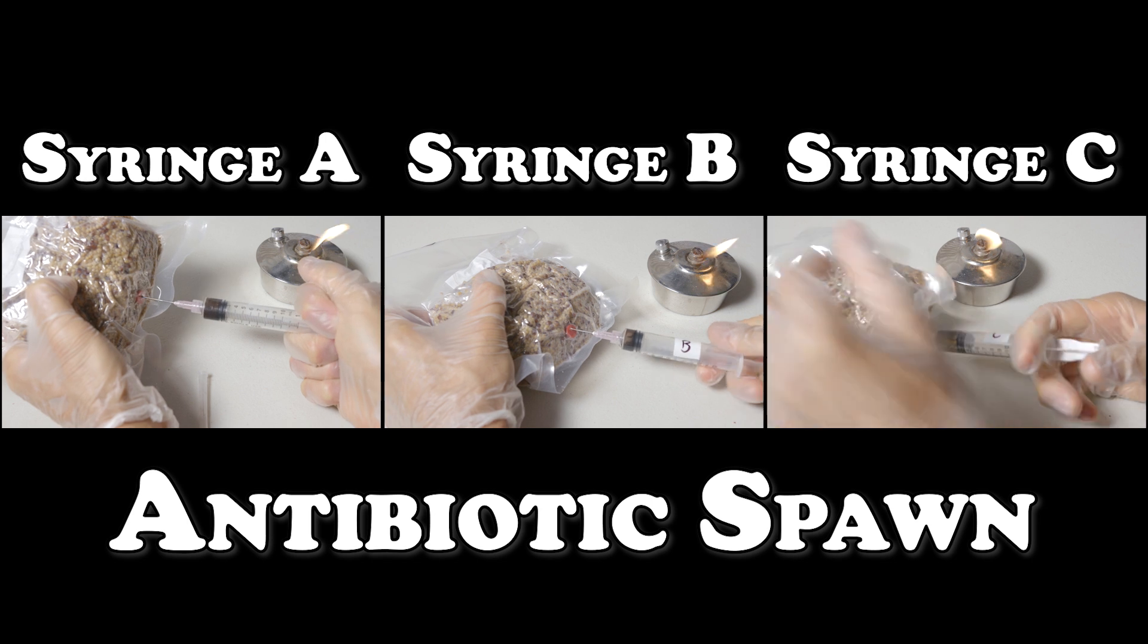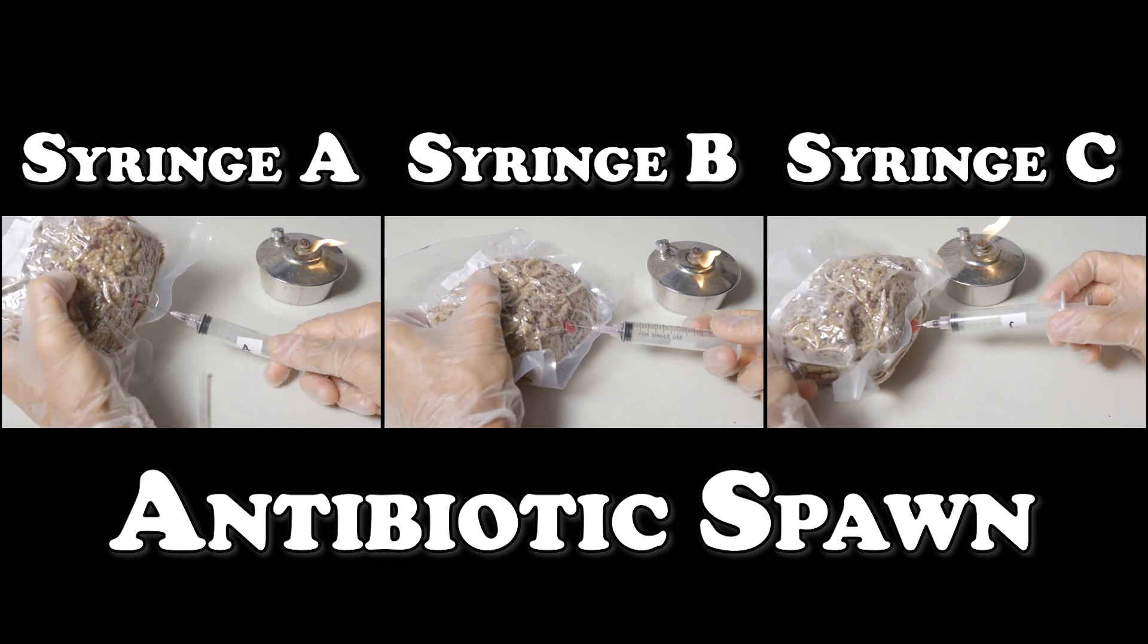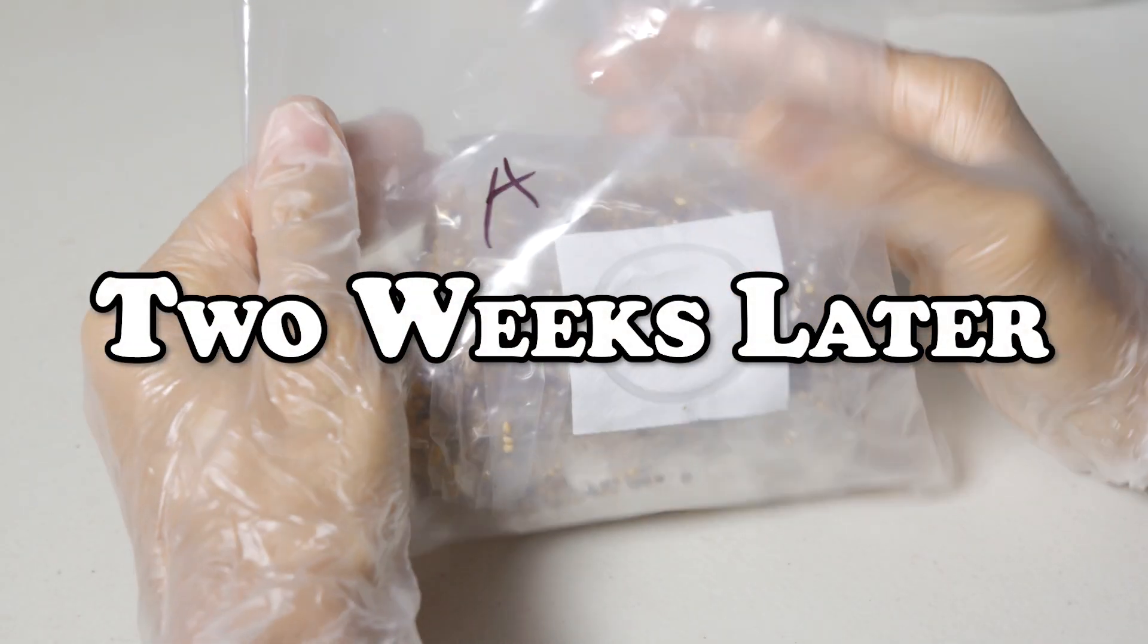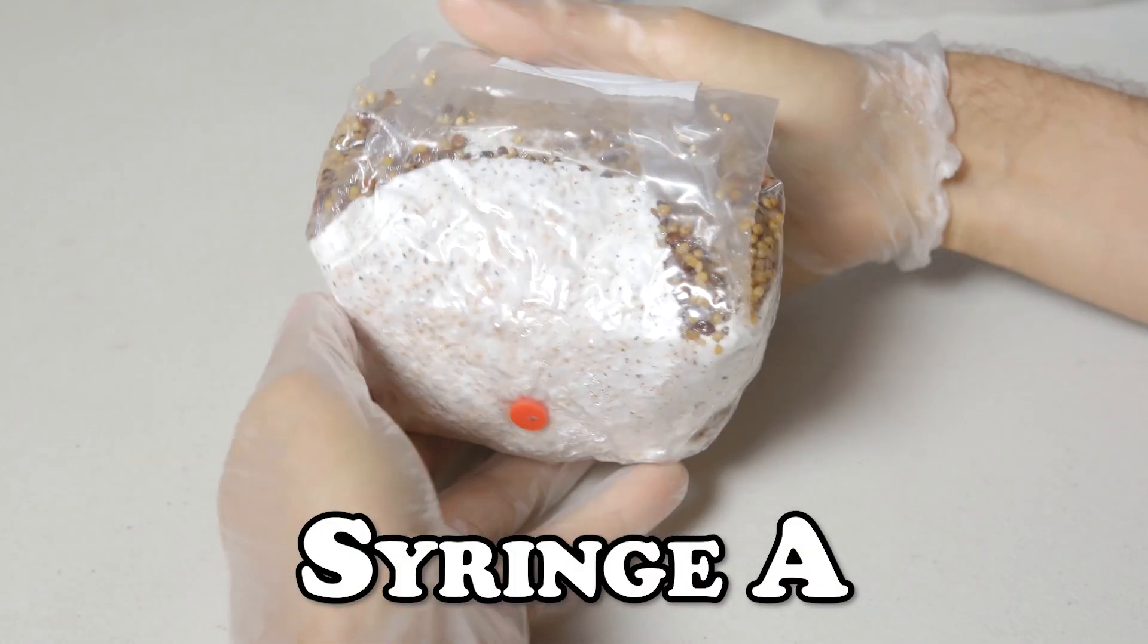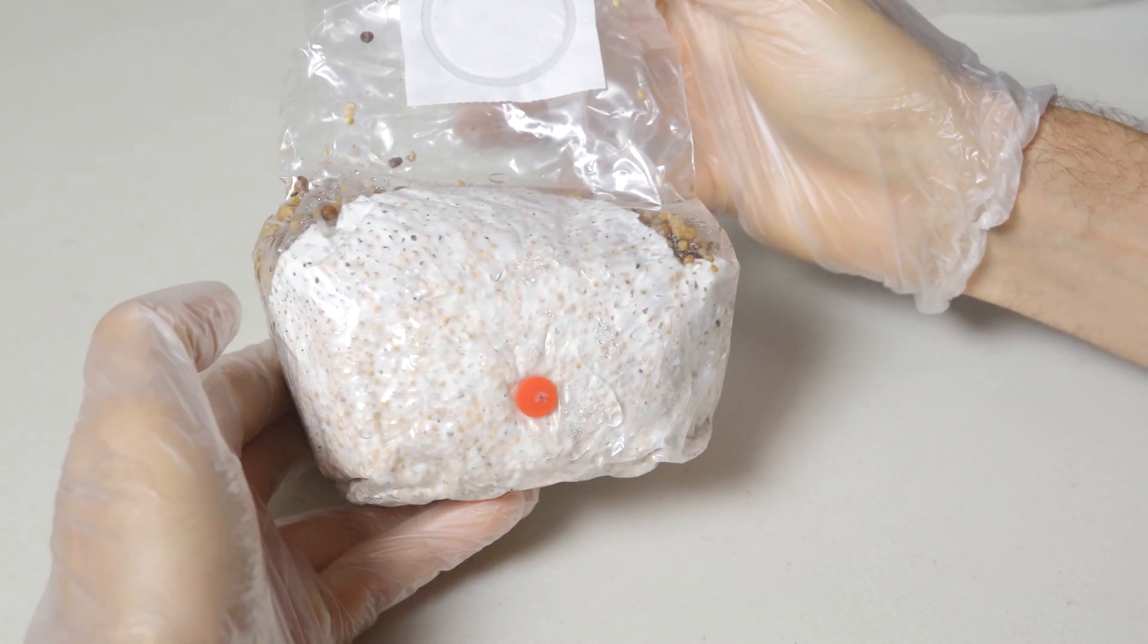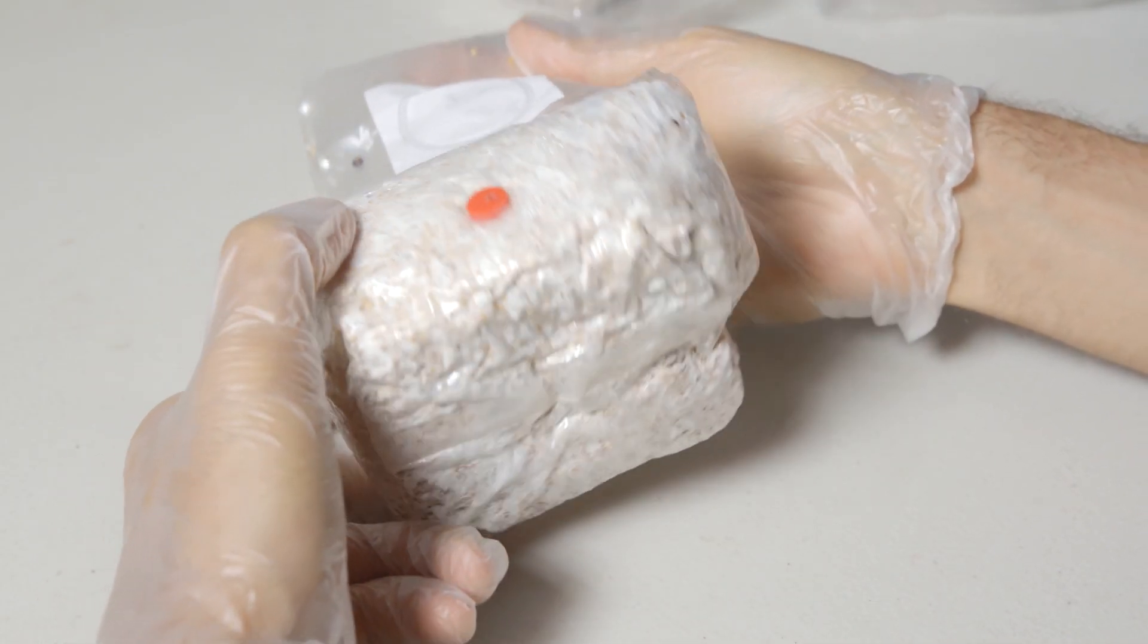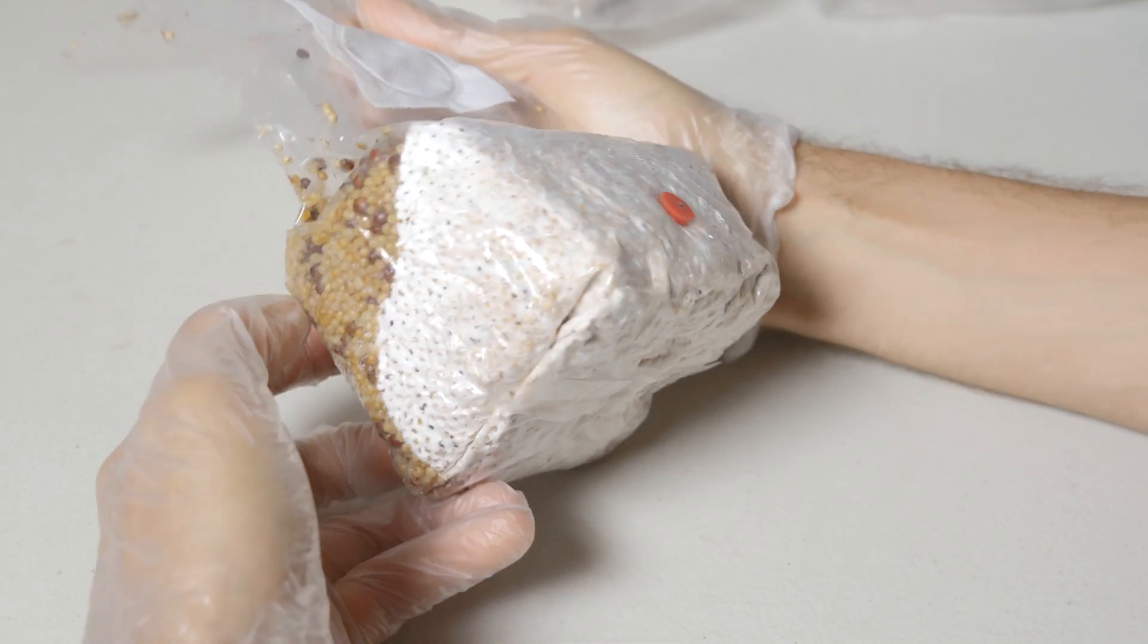Here we are inoculating the remaining spores into the treated grain, and for the sake of time we'll jump right ahead to two weeks after inoculation. We'll again start with bag A. As expected with this syringe, the mycelium is growing nice and healthy. We have that thick white mycelium growing from the inoculation port and it's ready to be mixed up and incubated until it's fully colonized, maybe in about four to six days time.